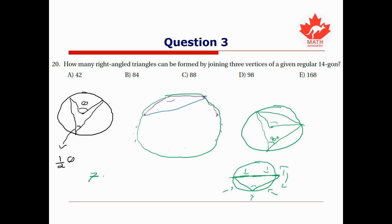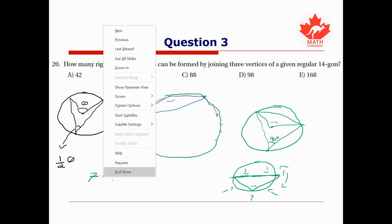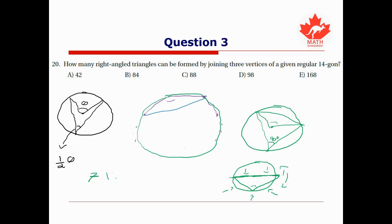So since I have a 14-gon, and I'm using up two of those points, that means for each of these diameter lines, I have 12 choices of point for the third point in my triangle. So the total is seven times 12, which is 84. And therefore our final answer is B, 84.